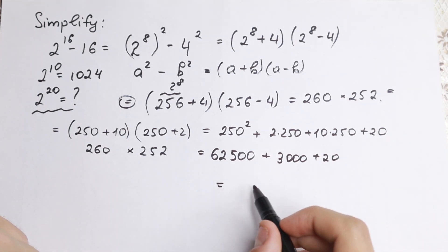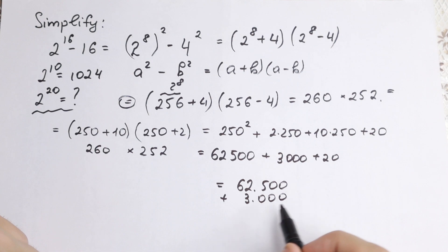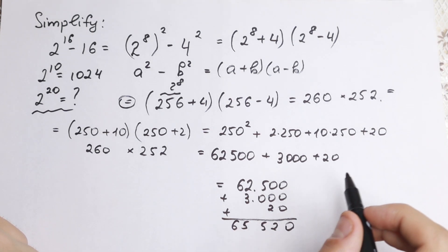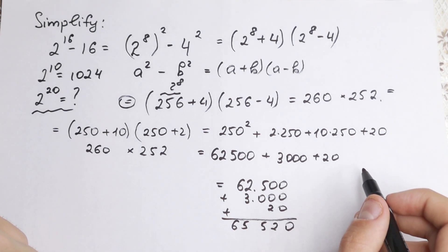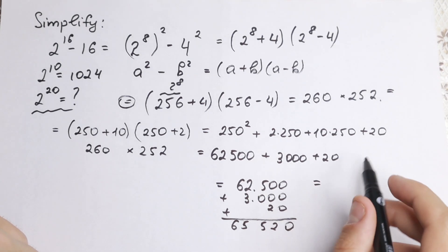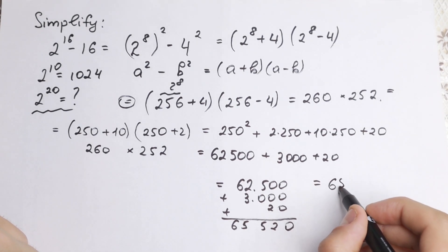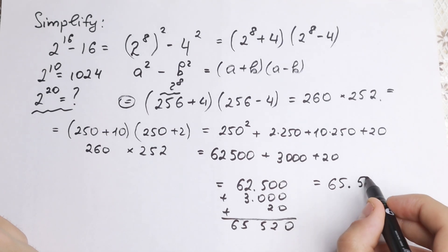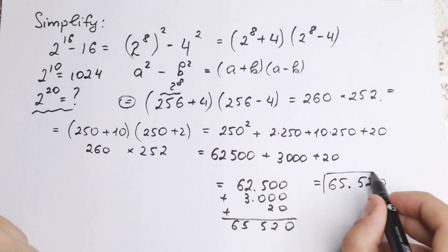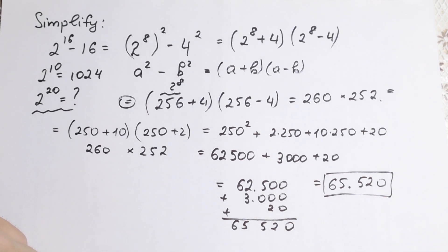Final step. Let's write it. Right here we have 62,500. We need to add 3,000 and we need to add 20. So if we add all of these elements: 0, 2, 5, 5, 6. 65,000 and 520. So 65,520. This is our answer.